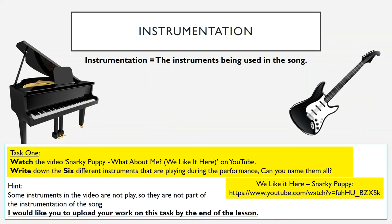I've put a link to the YouTube video in the yellow box on the right. While you're watching the video, I would like you to write down the six different instruments that are playing during the performance. Now, a quick hint — some of the instruments in the video are not playing. That means they are not part of the instrumentation of the song, because if they're not playing, they're not part of the song. So we're looking at the six instruments that are playing. There are more than six instruments that can be seen, but we're looking at the instrumentation of What About Me, not just what instruments can be seen.